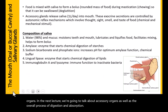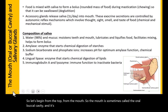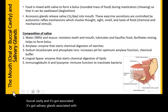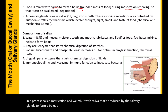Let's begin from the top, from the mouth. The mouth is sometimes called the oral buccal cavity, and it has salivary glands associated with it. When we put food in our mouth, we chew it in a process called mastication and we mix it with saliva produced by the salivary glands to form a bolus, a rounded mass of food that can be easily swallowed.